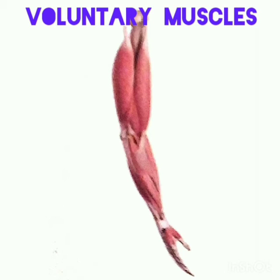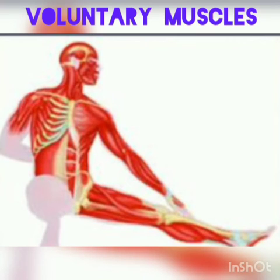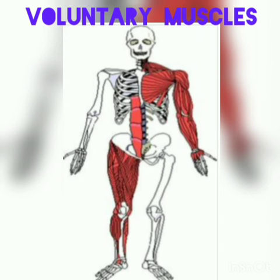Voluntary muscles. The muscles that are under our conscious control are called voluntary muscles. Skeletal muscles are responsible for moving our body parts. Our arms, legs, shoulders, and neck move when they are pulled by skeletal muscles attached to them.